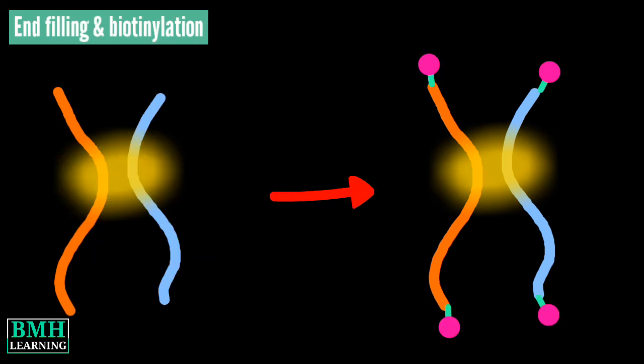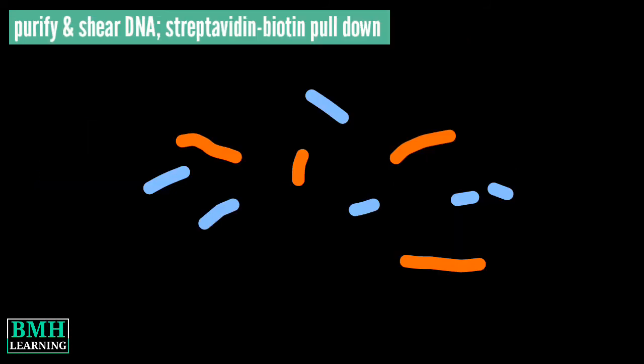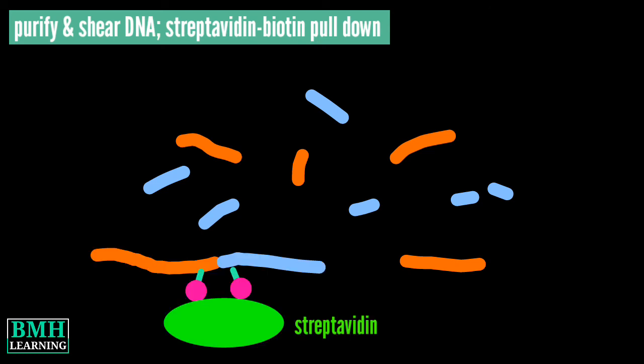The resulting fragments are biotinylated by end-filling of the fragment's ends. The fragments are then ligated and the DNA is purified and sheared. The biotinylated fragments are pulled down from the solution with streptavidin beads and a library is constructed and sequenced.